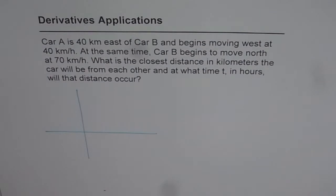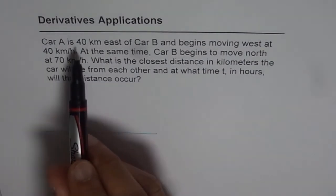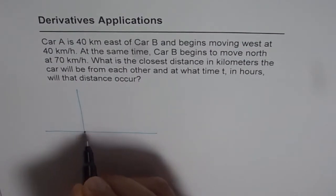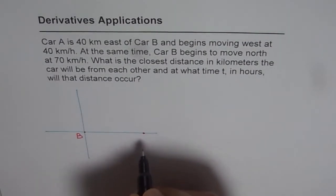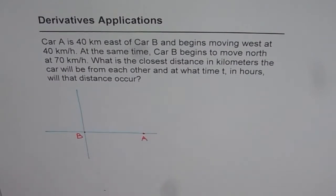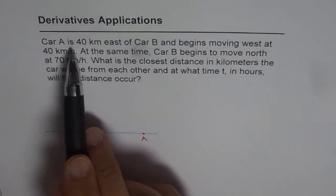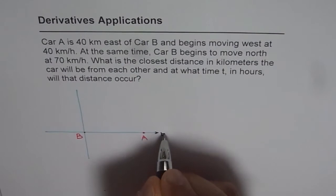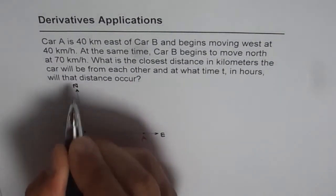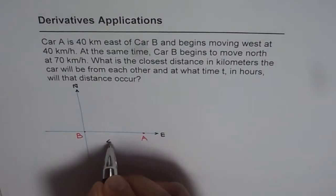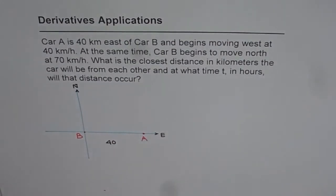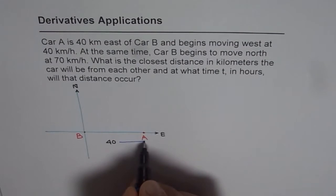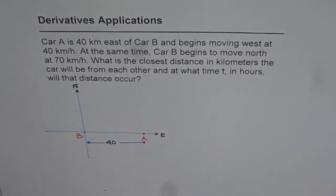What we have here is at an instance car A is 40 kilometers east of car B. So this is the point, let us say at origin, we have car B. And let us say this is the point where we have car A. Now the question says that car A is 40 kilometers east of car B and that is why I took it on this side. So this is east for us and that is north for us. Distance between A and B is 40.